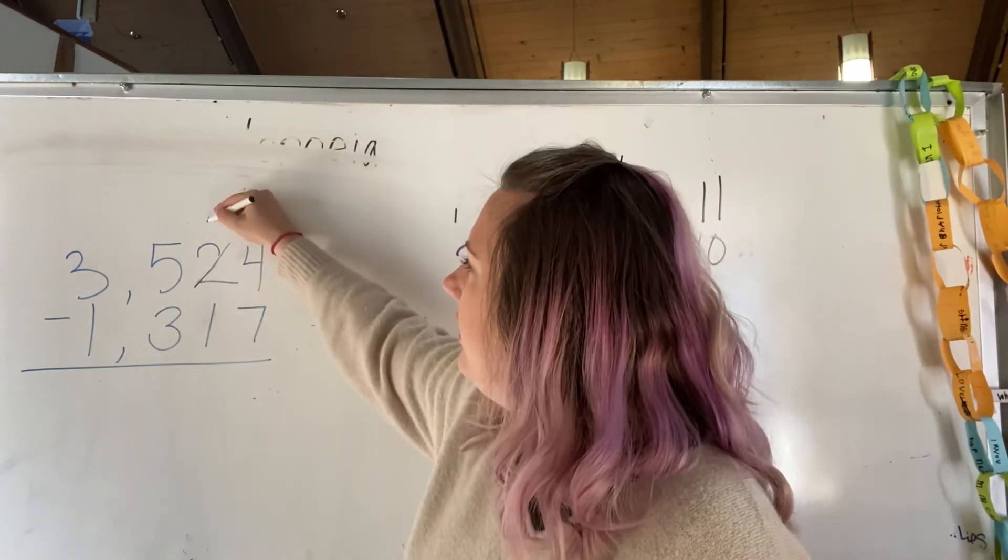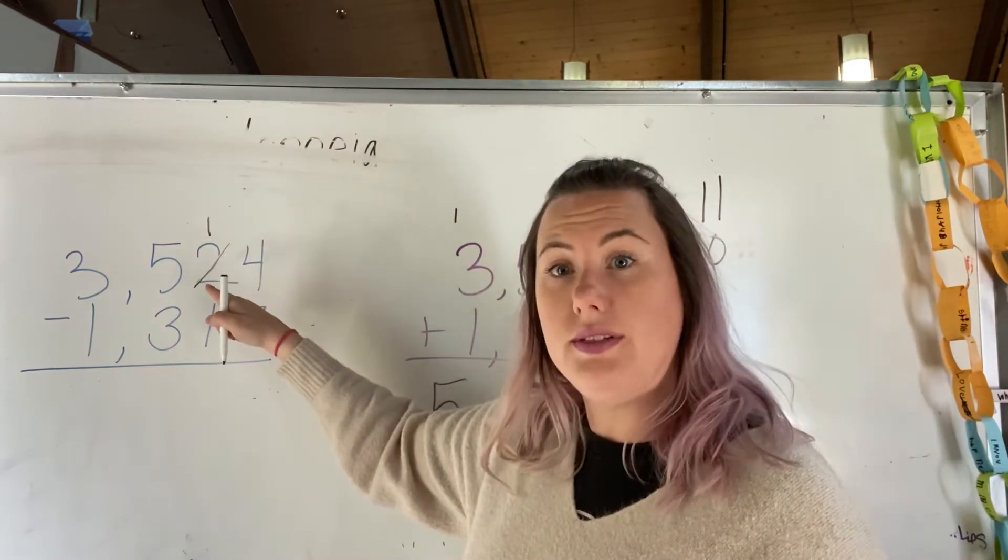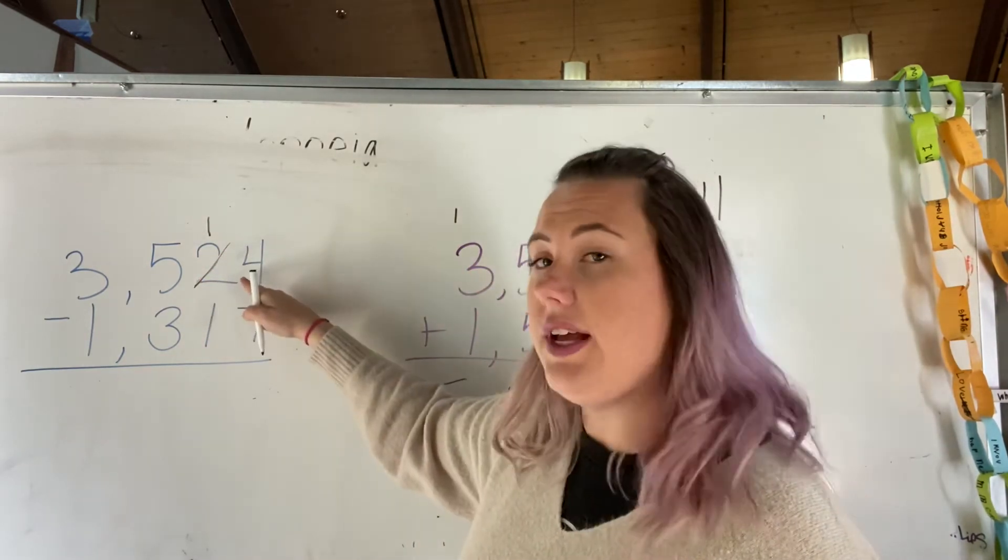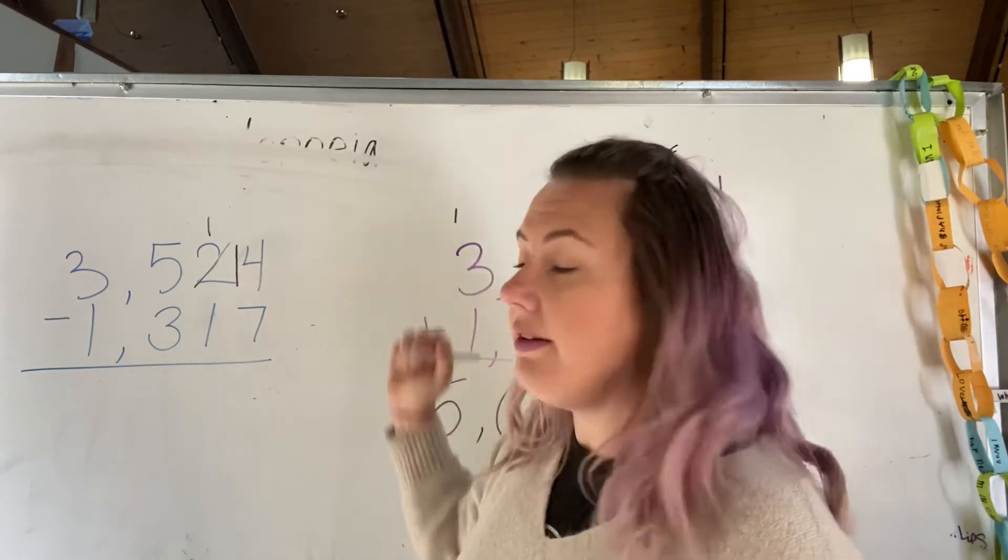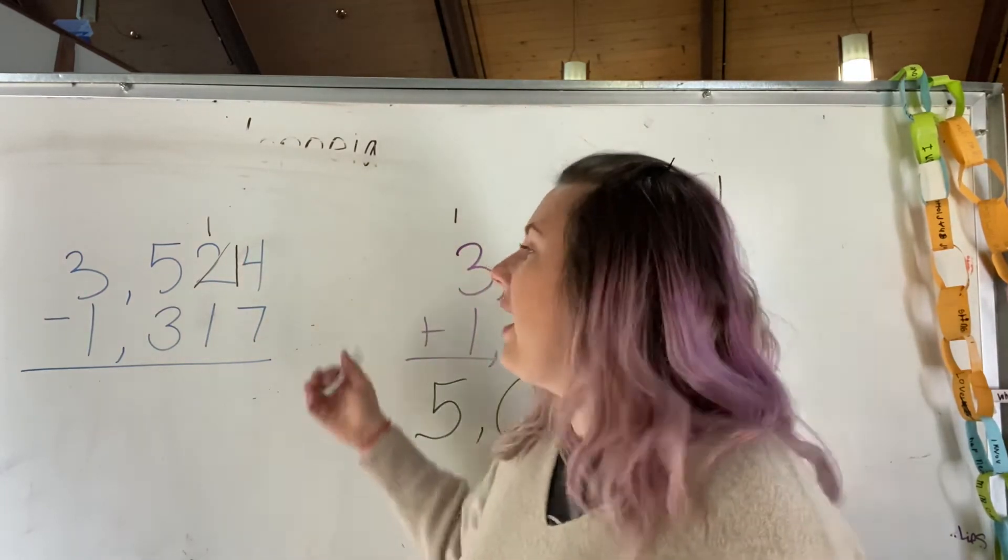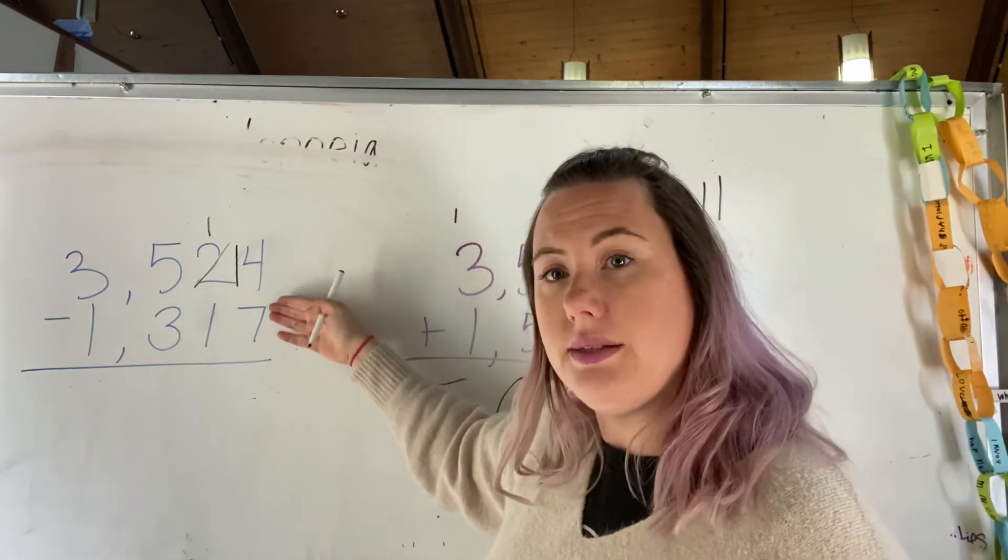You can cross that out and put a 1 there, because I'm going to take 1 ten from the tens and I'm going to give that to the units. Add 10 by just putting a 1 in front is the easiest way. So now I have 14 subtract 7.